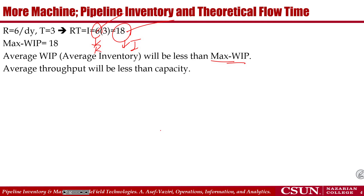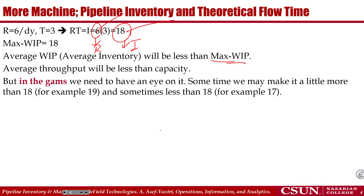The equation remains approximately valid, but in the game you need to observe what happens. Sometimes with max WIP set to 18 your flow time runs a little above 3 days, so you need to reduce it. Sometimes the flow time is comfortably under 3 days and you can increase it slightly — try 17 or 19. This is a good initial estimate, but you need to monitor the actual results.